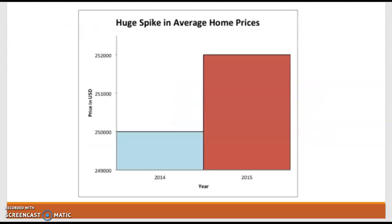Another vertical axis issue: a huge spike in average home prices. Look how much bigger the bar is from year to year. But look at the vertical axis again — in 2014 that blue bar goes to 250,000, and in 2015 it's 252,000. That is an increase of 2,000 for an average. Is that a huge spike? Again, if we started our y-axis at zero, or even if we did a squiggly and started it at 100,000, it would still show that this is a very minimal increase.